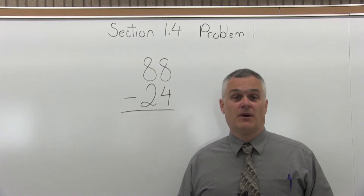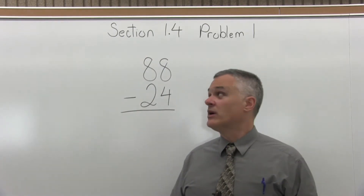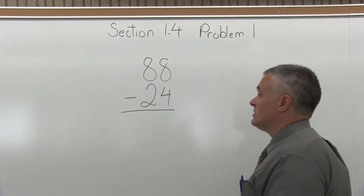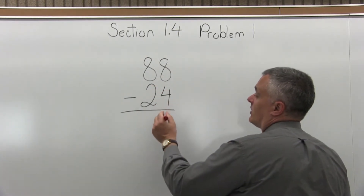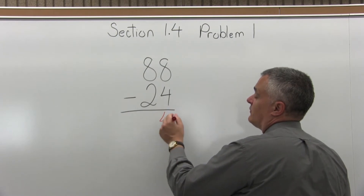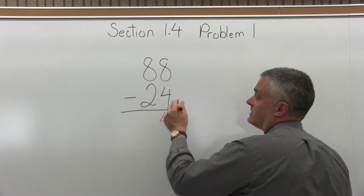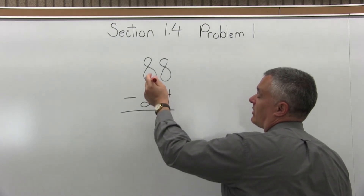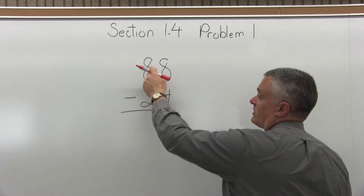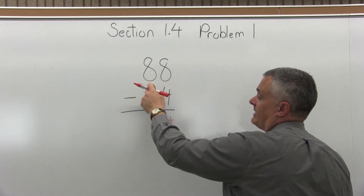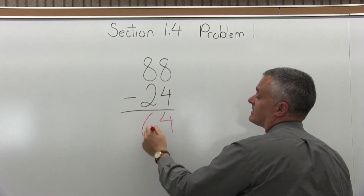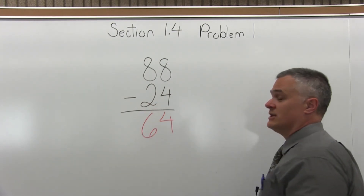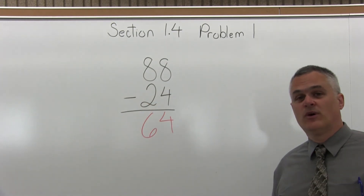It's 88 minus 24. So on the first column, 8 minus 4 is 4. There's nothing to borrow. You just go to the next column — 8 minus 2 is 6. So the answer is 64.